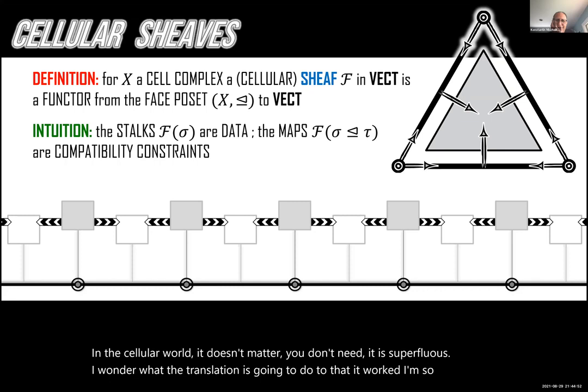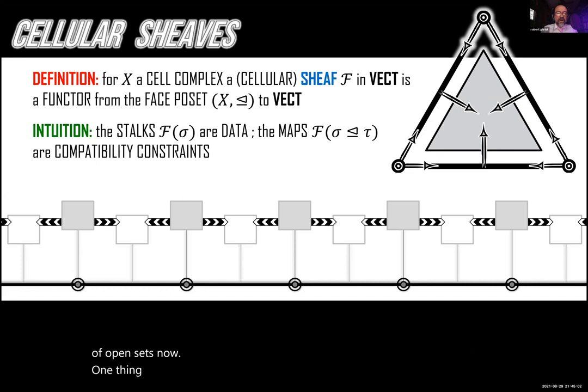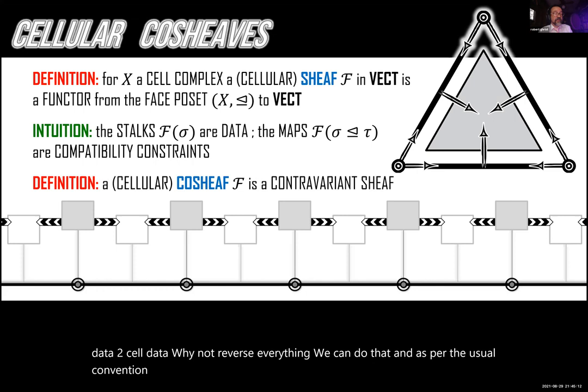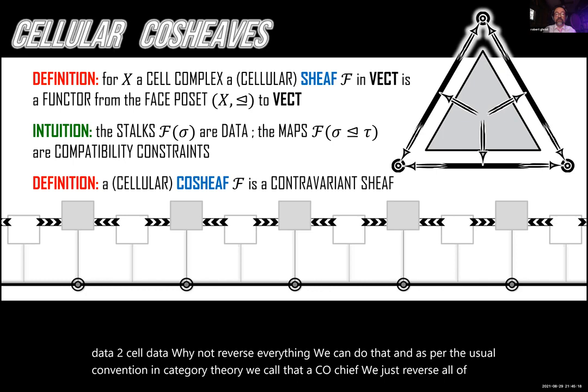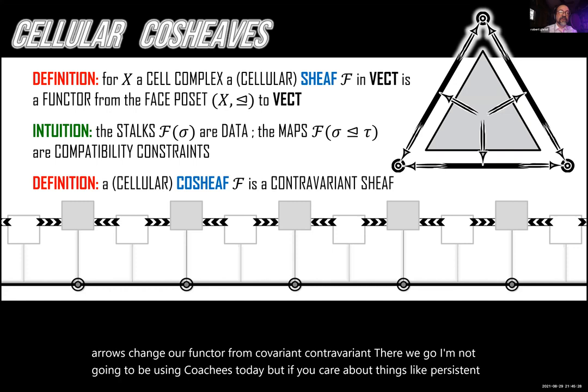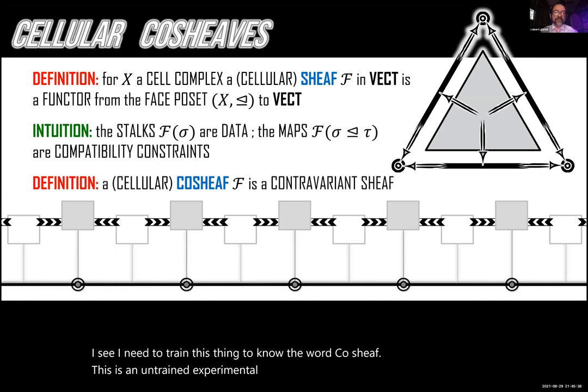You might wonder: why go from vertex data to edge data to two-cell data? Why not reverse everything? We can do that. As per the usual convention in category theory, we call that a co-sheaf — we just reverse all the arrows, change our functor from covariant to contravariant. I'm not going to be using co-sheaves today, but if you care about persistent homology, you might care more about co-sheaves than sheaves.